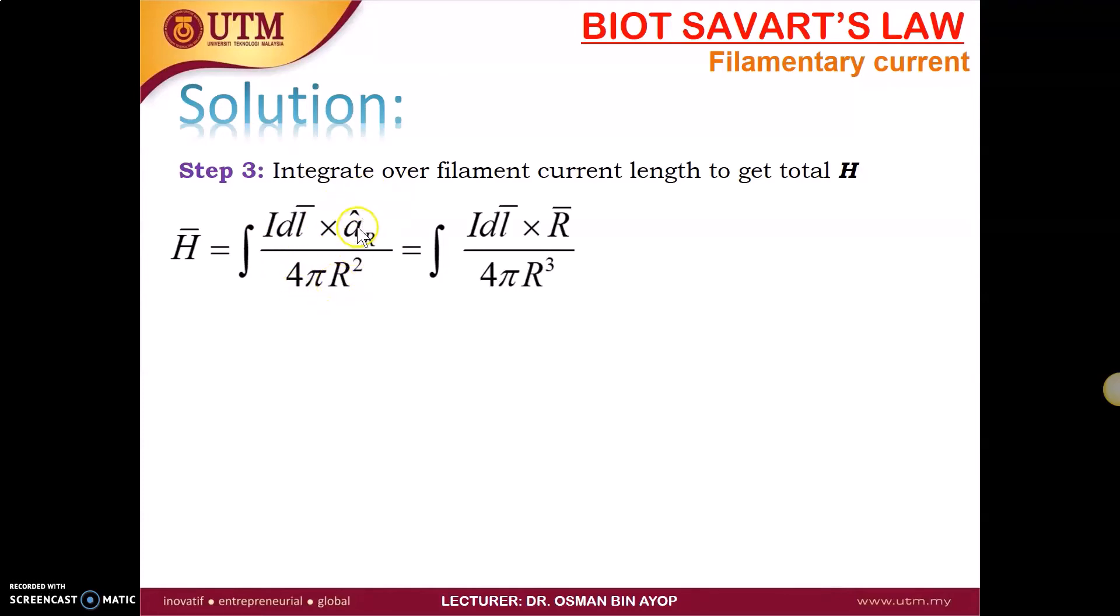So the unit vector R equal to the vector R divided by R, so you've got R cube here. So our I DL, the DL is basically A D phi. The direction is phi. Cross product with the vector R, the unit vector R is negative R A plus Z Z, divided by 4 pi, this is A square plus Z square power of 3 over 2.